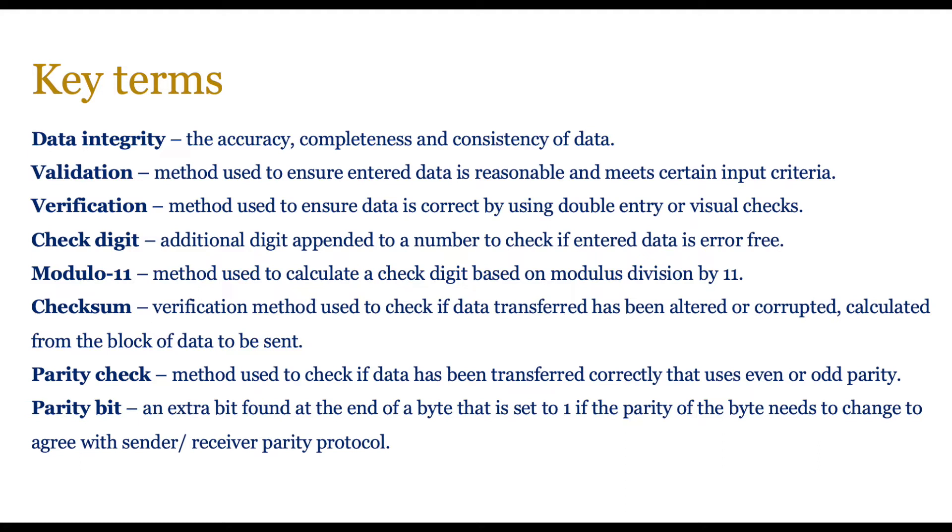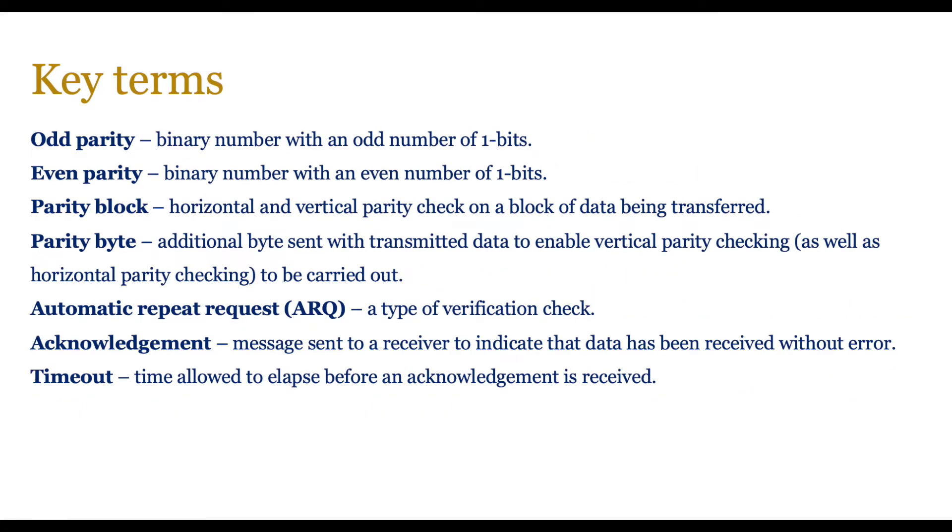Similarly, you have parity bits and parity checks, which check if the data has been transferred correctly through the use of even or odd parity. Odd parity basically means you count the number of ones, and if the binary number has an odd number of one bits, it's odd parity. If it has an even number of one bits, that's even parity. We can also use a parity byte and a parity block to do some additional checking, and we'll be looking at this in a bit more detail later.